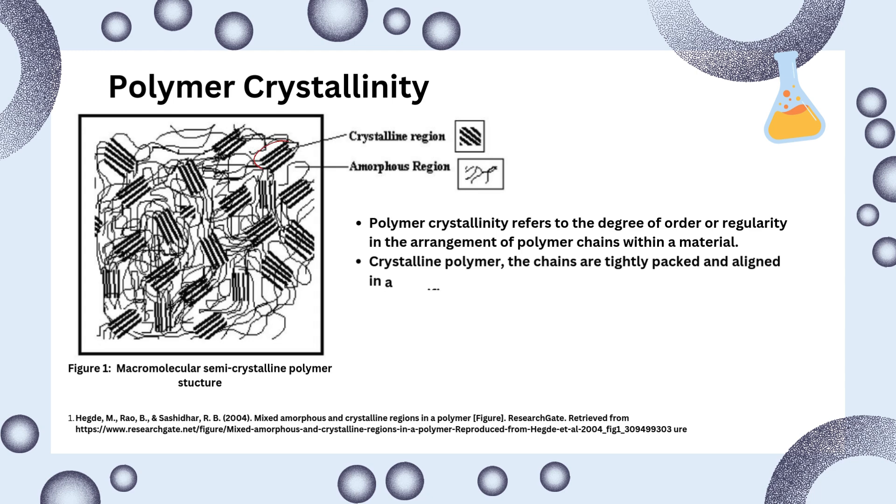Crystalline regions are tightly packed and aligned in a repeating pattern, similar to crystals, giving the polymer strength, rigidity, thermal resistance, and higher density. These regions form due to factors like linear chain structure, strong intermolecular interactions, and controlled cooling.